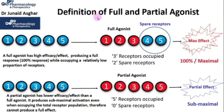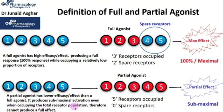Now is the right time to go over the proper definition of a full agonist and a partial agonist. A full agonist has a high efficacy or a maximum effect — 100% effect — while occupying a relatively low proportion of receptors. For example, three receptors are occupied by a full agonist and it has two spare receptors. A partial agonist, on the other hand, has a lower efficacy than a full agonist and produces a submaximal activation even when occupying the total receptor population, and therefore cannot produce a full effect. All five receptors are occupied with no spare receptors, and even then the response is a partial or submaximal one.